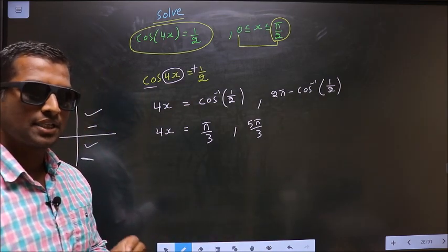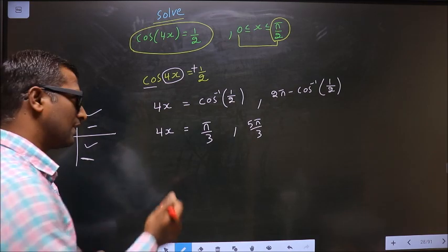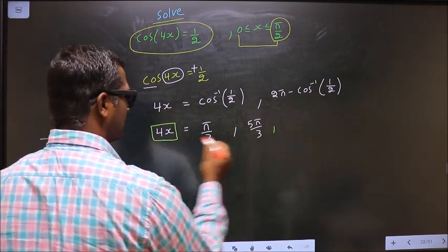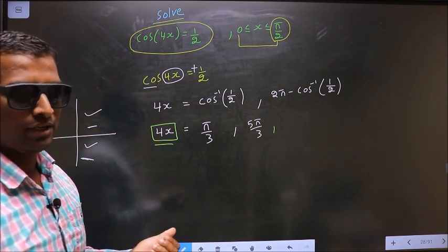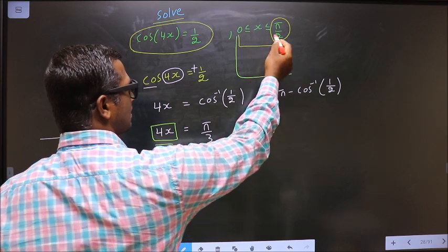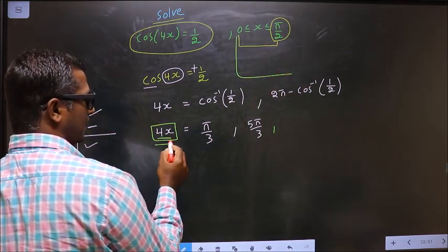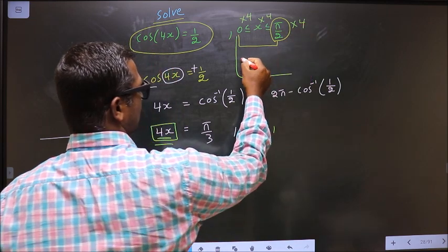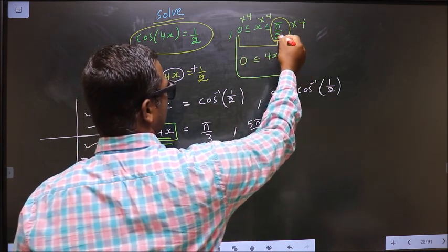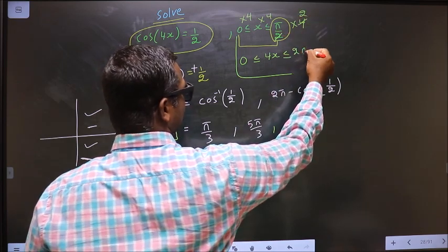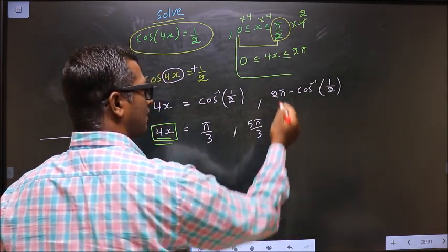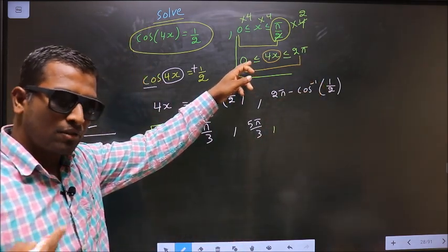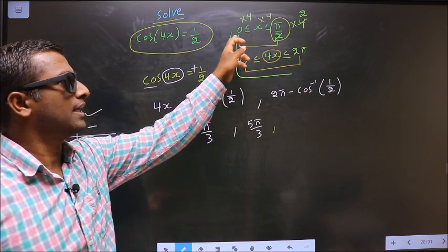Now the question arises: in what interval should the values for 4x lie? Question 2: how many more values shall I find for this? To answer that, we do this. Here x lies in the interval [0, π/2]. Here we have 4x, so to get 4x we should multiply by 4. So now we get 0 ≤ 4x ≤ 2π. Now the values of 4x should lie in this interval. When this happens, automatically the values for x will lie in this interval.